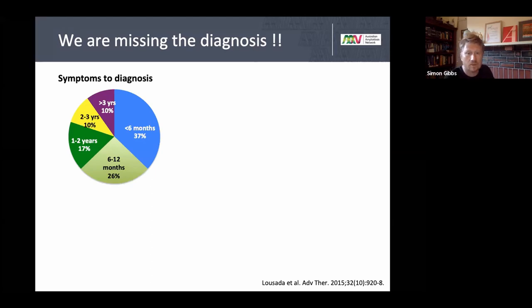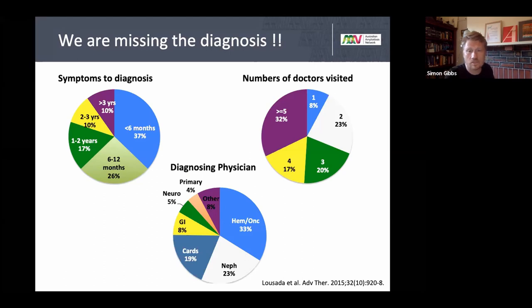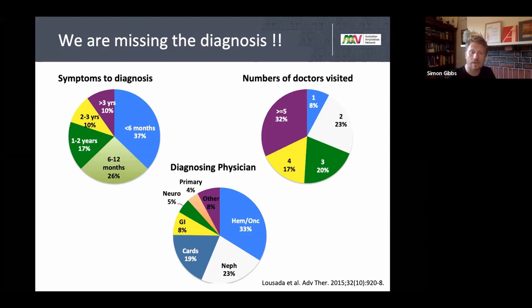The core problem is that we're missing the diagnosis, and earlier diagnosis means better outcomes. A third of patients wait over a year from symptom onset to proper diagnosis, and more worryingly, half of all patients see four or more doctors before getting the right diagnosis. Cardiologists have let the side down somewhat — only one in five cases of amyloidosis in 2015 was diagnosed by a cardiologist, despite 50–70% of all amyloidosis cases having cardiac involvement. That is changing, with cardiologists becoming more aware and diagnosing the disease earlier.